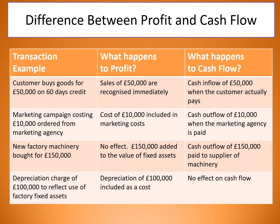If there was a marketing campaign costing £10,000 ordered from a marketing agency — the cost of £10,000 is included in marketing costs immediately for profit. But the cash outflow of £10,000 would only go to the agency once you have paid, and you'd be more likely to pay towards the end of the campaign than at the beginning.